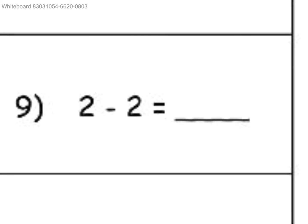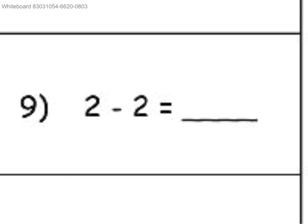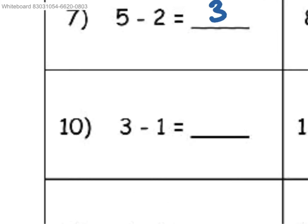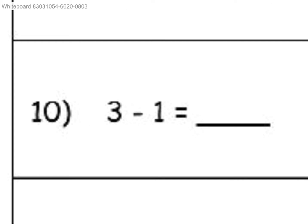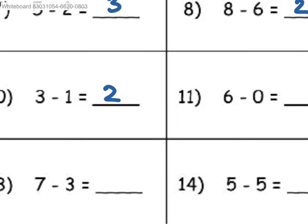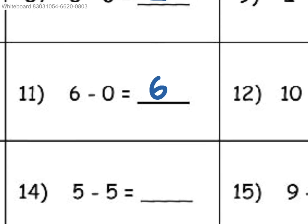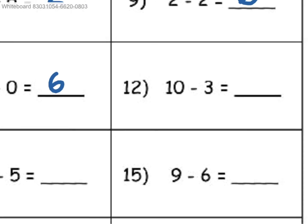And then 9 minus 2 would be leaving you with 0, since it's the same number being subtracted by itself. And 3, take away 1, would be 2. 6, take away 0, you would be left with 6, since you're taking away nothing from the original number.